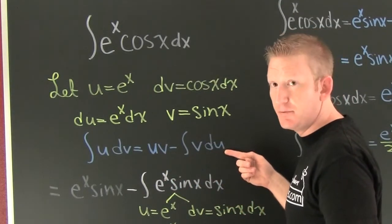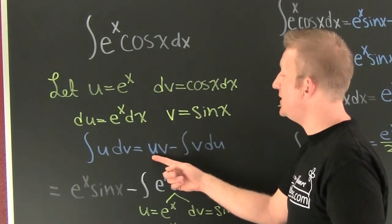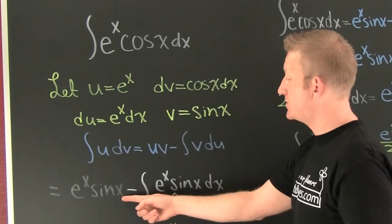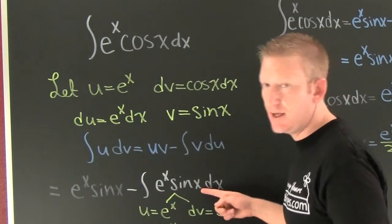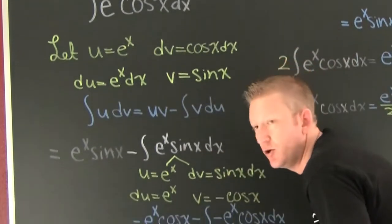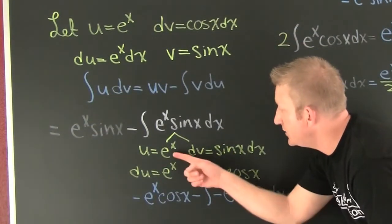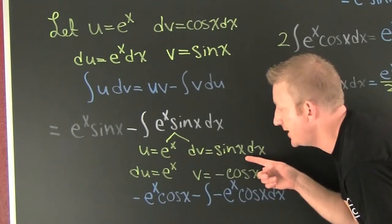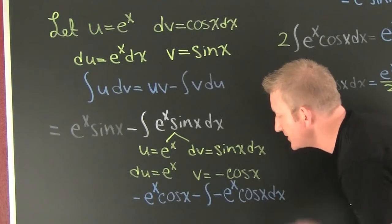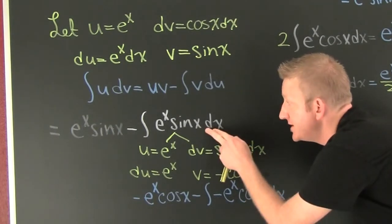The integral of u dv is equal to uv minus the integral v du. Now let me put my pieces in there. My u is e to the x, my v is sine x, so that goes there. Minus this integral, e to the x sine x dx. Here again, we got to go parts.